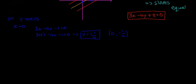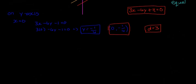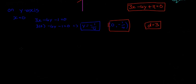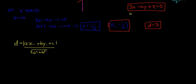So the three pieces of information we're going to use: the perpendicular distance formula, the point (0, minus 1 over 4), and D equals 3. The formula is D equals the modulus of AX₁ plus BY₁ plus C, all divided by the square root of A squared plus B squared. In this case, A equals 3, B equals minus 4, and C equals k. D is equal to 3, X₁ is 0, and Y₁ is minus 1 over 4. So with that, we should be able to solve it.